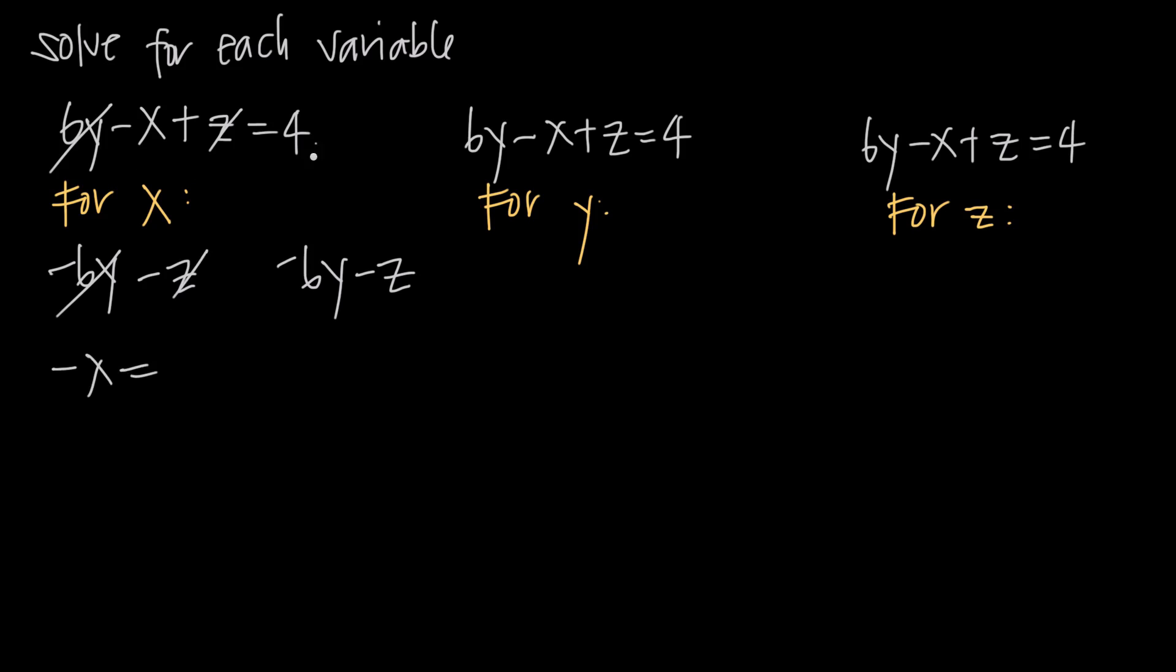We'll have negative x on the left. On the right, we'll have 4 minus 6y minus z. Now we've got x by itself, but it's multiplied by a negative 1. We have negative x, and we just want to solve for x.